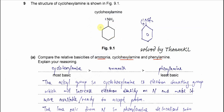Comparing cyclohexylamine with ammonia: ammonia's nitrogen is not bonded to any alkyl group, so it is not as basic as cyclohexylamine. The alkyl group in cyclohexylamine donates electrons to the nitrogen, increasing the electron density on nitrogen so the lone pair is more available to react with a proton. That's why cyclohexylamine is more basic than ammonia.